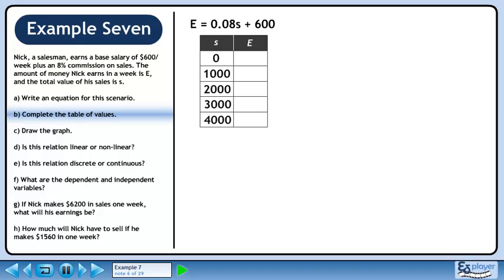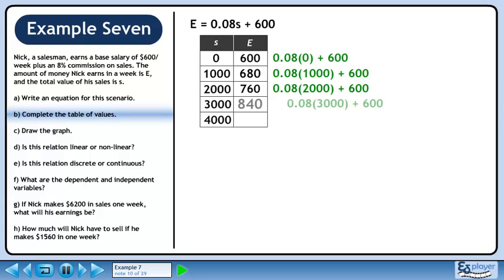In Part B, we'll complete the table of values. When S equals 0, E equals 600. When S equals 1000, E equals 680. When S equals 2000, E equals 760. When S equals 3000, E equals 840. When S equals 4000, E equals 920.